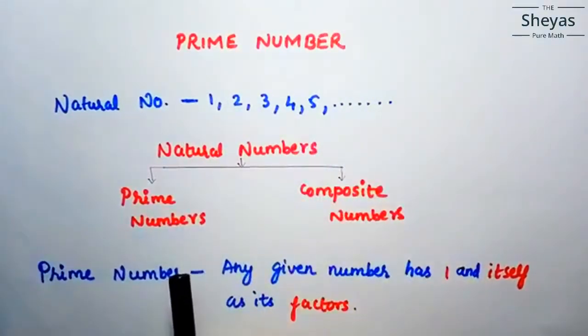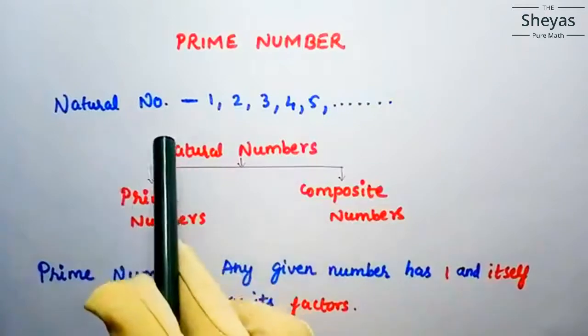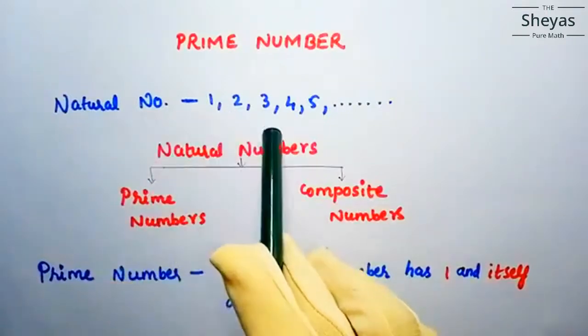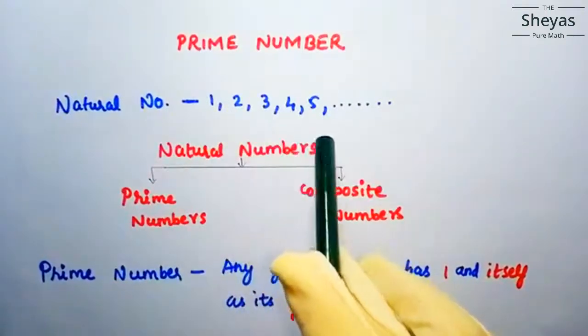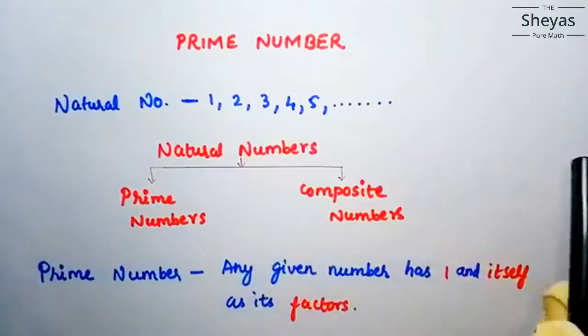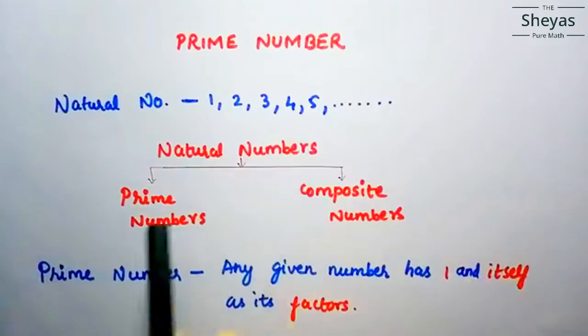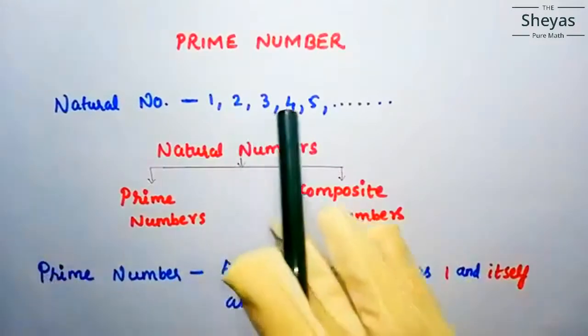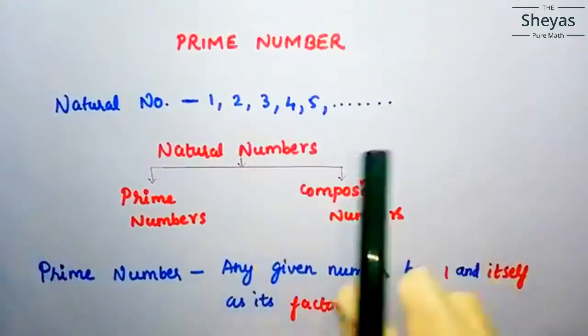Let us start with natural numbers. What is the natural number? 1, 2, 3, 4, 5, and so on. It goes on. So the natural number starts with 1 and the number goes on.